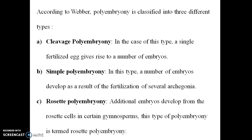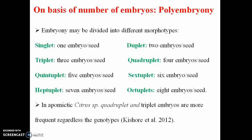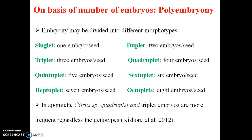Third is rosette polyembryony, which is common, where additional embryos develop from rosette cells. The cell arrangement in the rosette type is characteristic of this form of polyembryony.